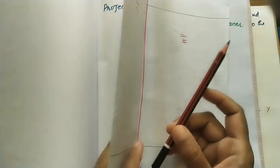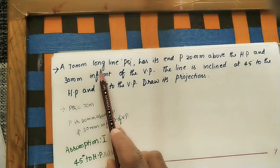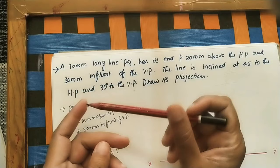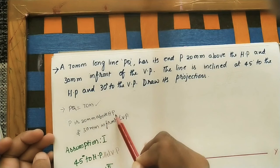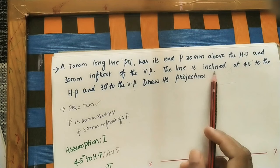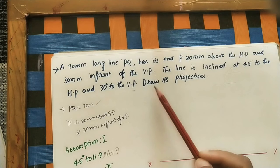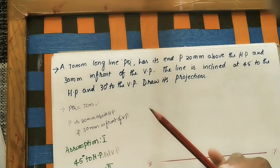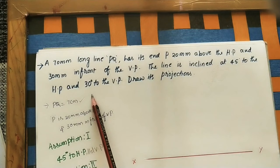Let us take the given data. A 70 mm long line PQ is given. Point P is 20 mm above the HP and 30 mm in front of the VP. The line is inclined at 45 degrees to the HP and 30 degrees to the VP. We need to draw its projections — the front view and top view of line PQ.